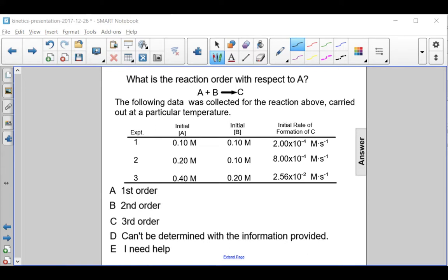What is the reaction order with respect to A, where A plus B produces C, given the following data collected for the reaction carried out at a given temperature?